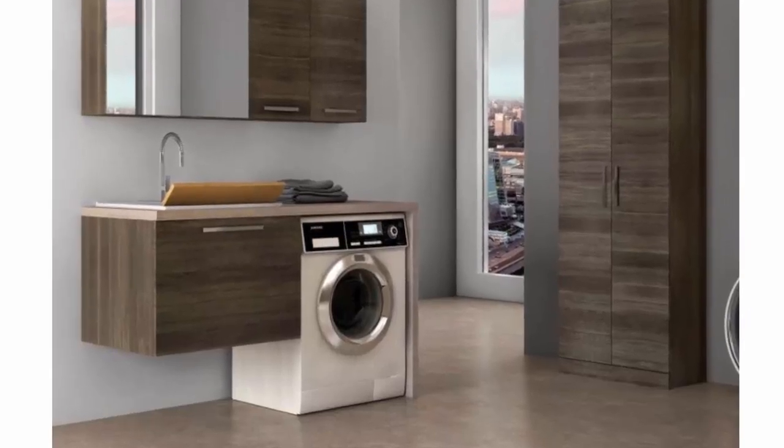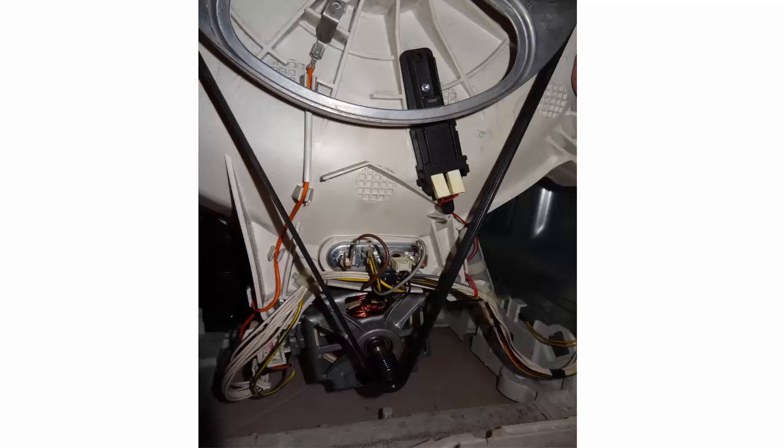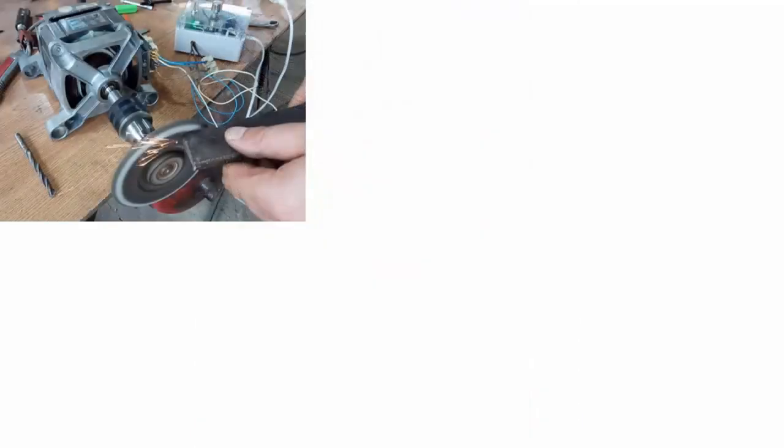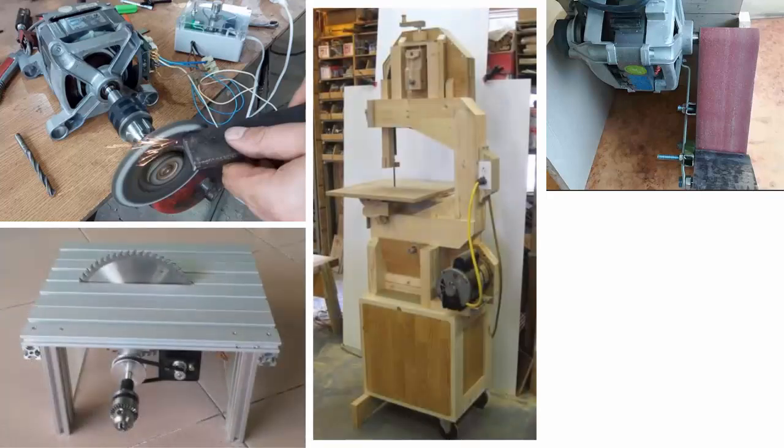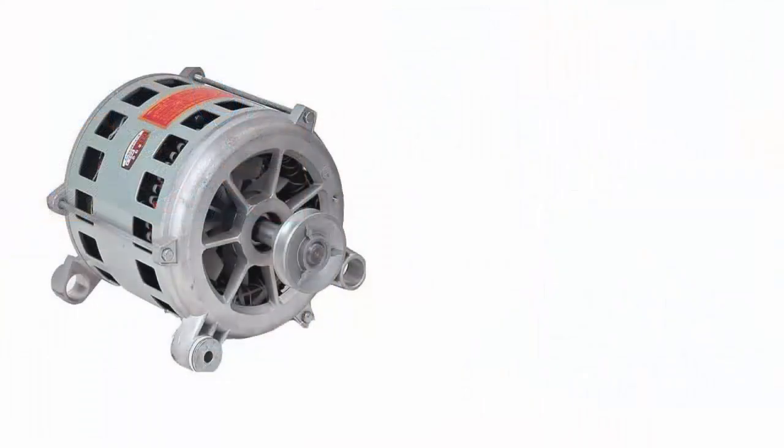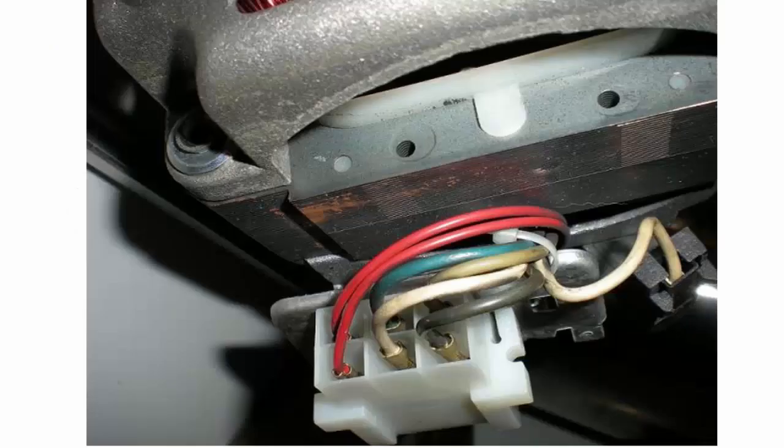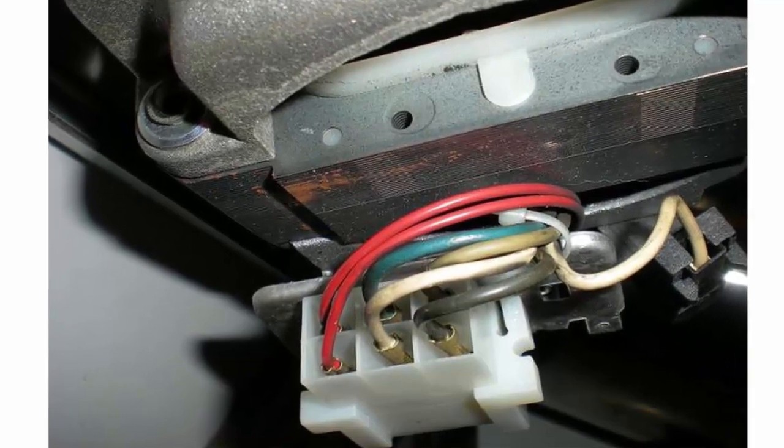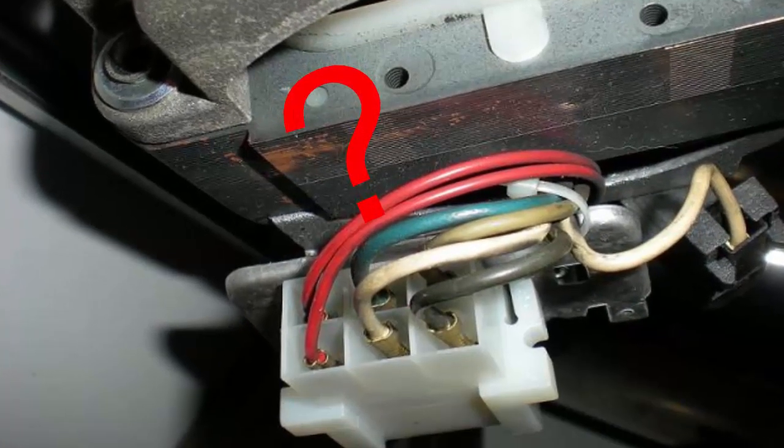Hi everybody. Washing machine motors may be useful for making many interesting tools such as knife sharpeners, circular saws, drill presses, and also electricity generators. Old washing machine motors are asynchronous motors, but the new ones are universal motors. Before using these motors to make something, we must know first how to plug it in. In this video, we will see together how to plug and restore an old washing machine motor.